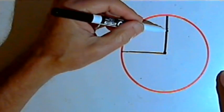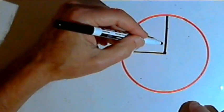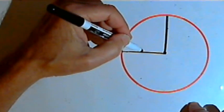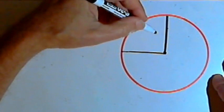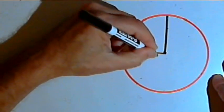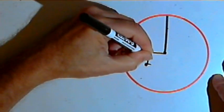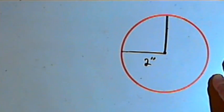So a sector is an area of the circle which has been cut off by two radii. Now, to find the area of this sector, the smaller one in this case, I need to know the radius. I'm going to say the radius of this circle is two inches.